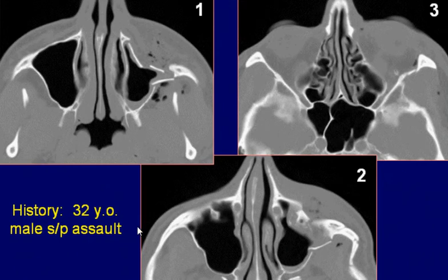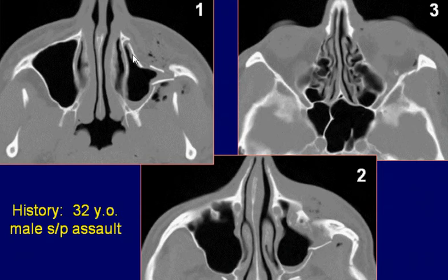A 32-year-old male with history of assault. Axial CT images of the face in bone window settings demonstrate comminuted fractures with depression deformity of the anterior and lateral walls of the left maxillary antrum.